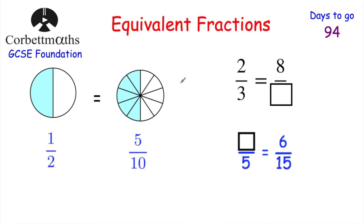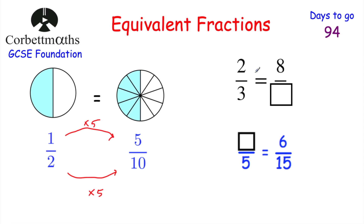Now equivalent fractions — particularly useful when adding fractions. A half is the same as 5 tenths: if you multiply the denominator 2 by 5 you get 10, and multiply the numerator 1 by 5 you get 5, so 5 tenths. As long as you multiply or divide both the numerator and denominator by the same thing, you get an equivalent fraction. For example, 2 thirds equals 8 over something: to get from 2 to 8 you multiply by 4, so multiply the denominator 3 by 4 to get 12. The missing number is 12.